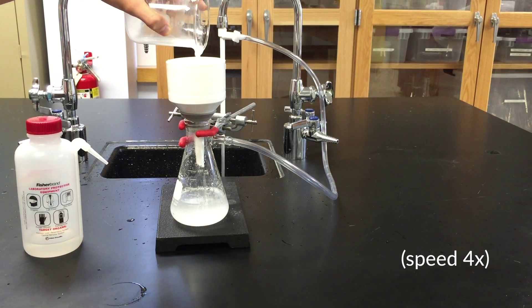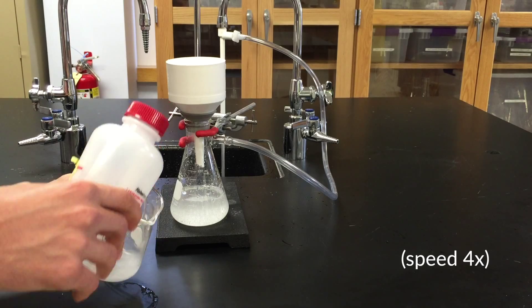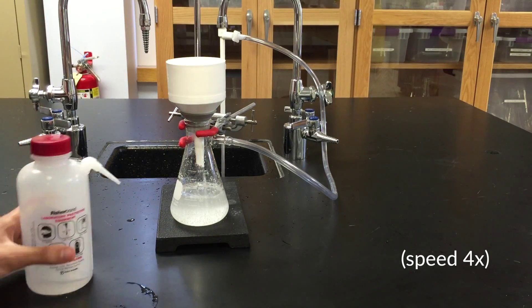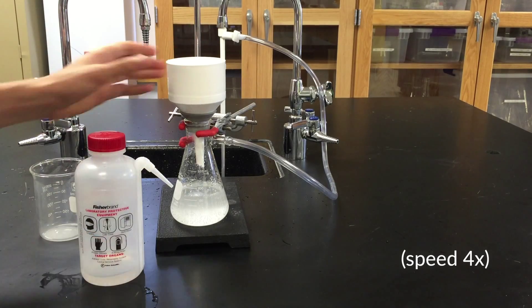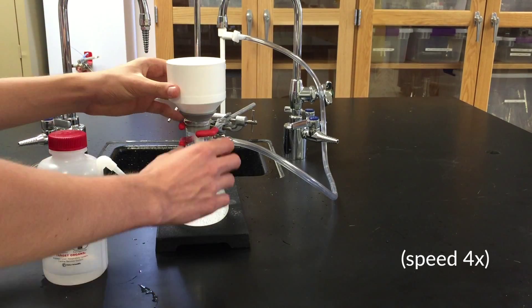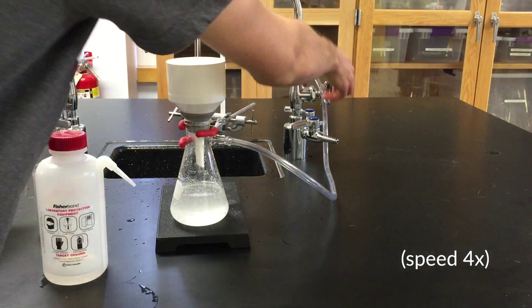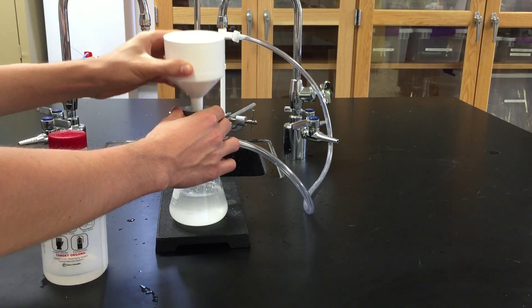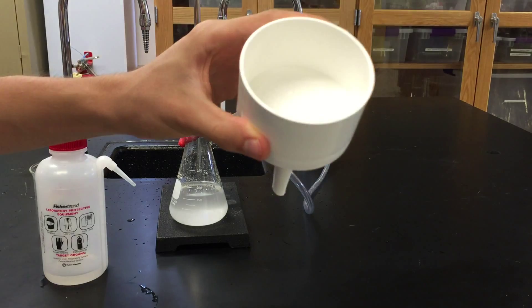Rinse the filter paper with water periodically to push through any soluble substances trapped in the precipitate. Once you're done, turn off the water. You can see that what's collected on the filter paper is the dry precipitate.